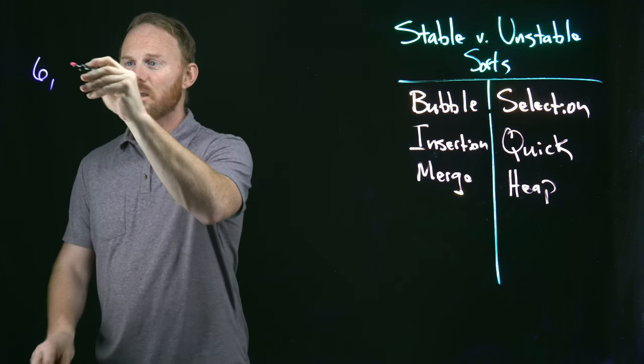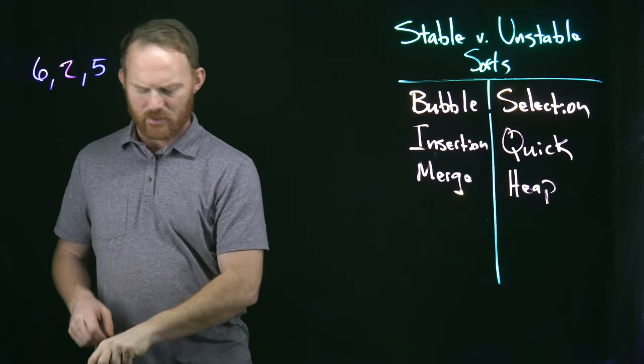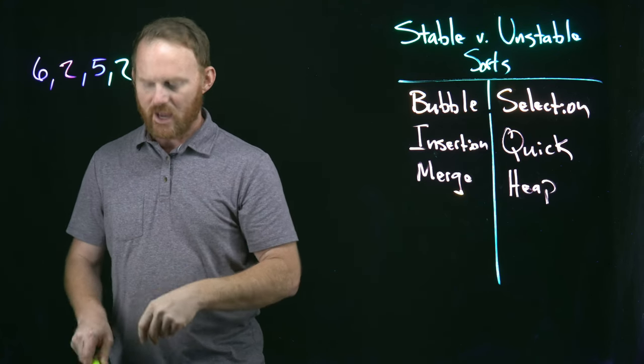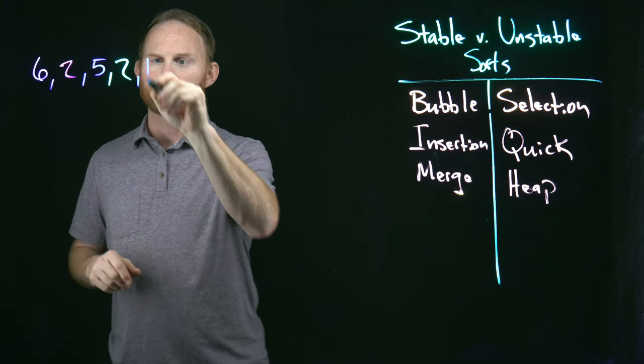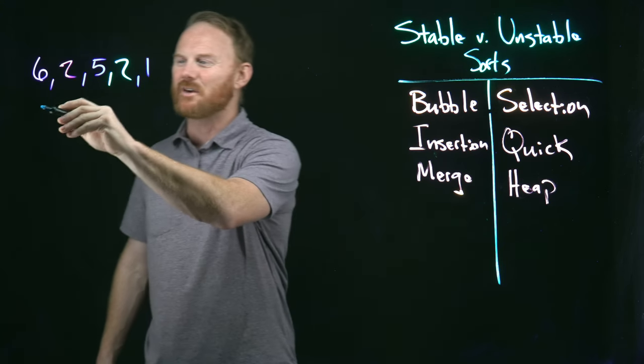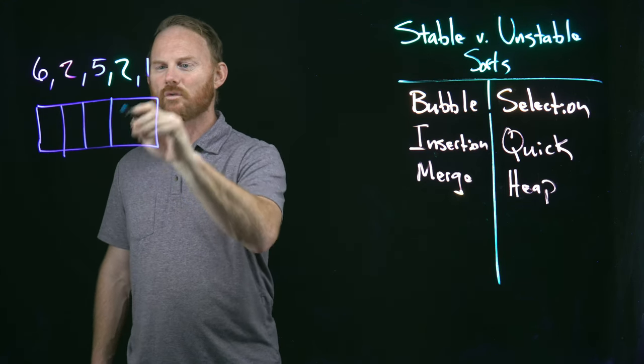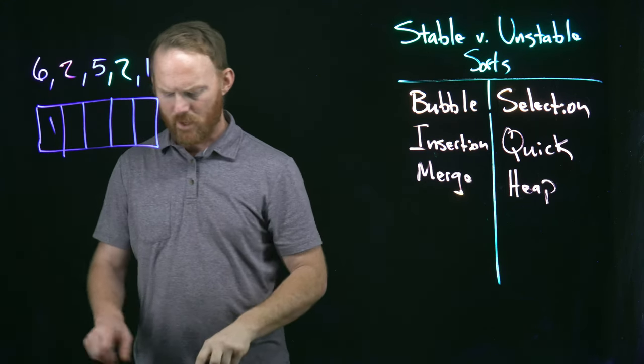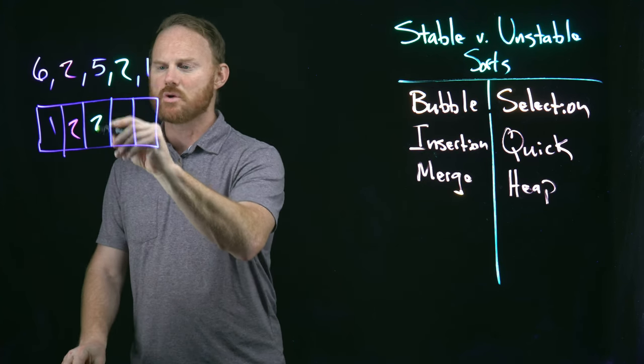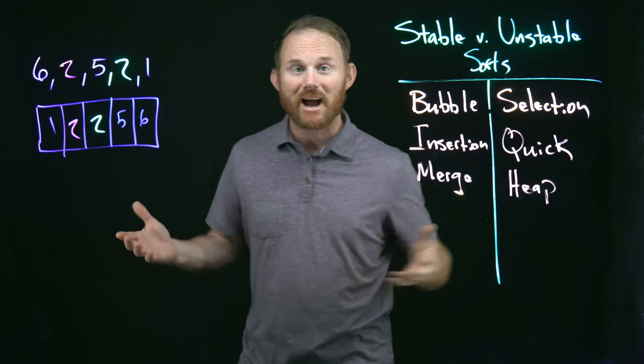We'll put a list up here. We'll have the number six, followed by two, the number five, we'll switch colors here and have another two, and then we'll finish up with the number one. So we've got five numbers. We're not going to implement a sort algorithm. We don't need to. Instead, what we're going to do is just sort it ourselves the old-fashioned way. We'll start off with the number one, and then we'll put the number two in here, followed by the number two, followed by five and six. Our list is sorted.